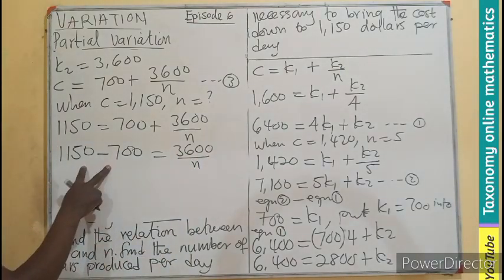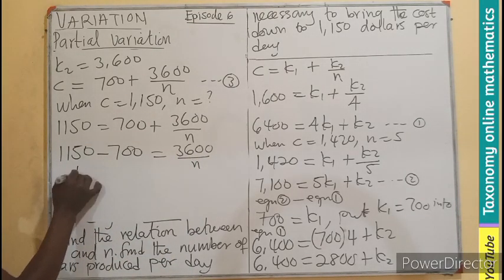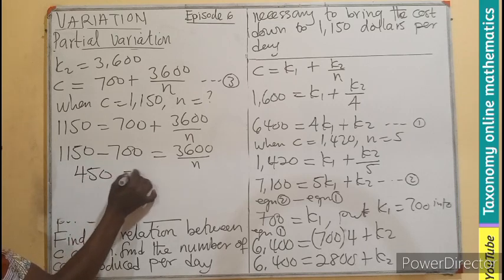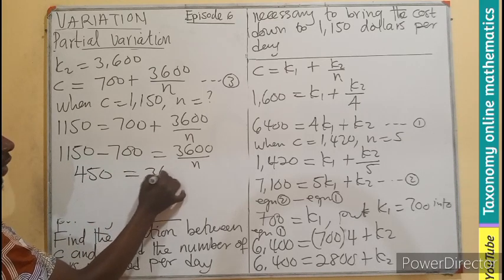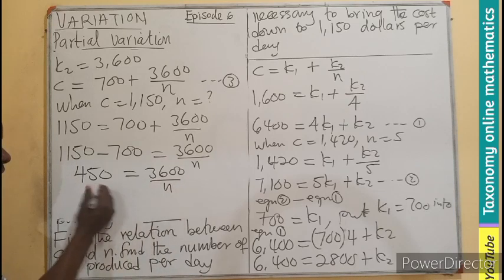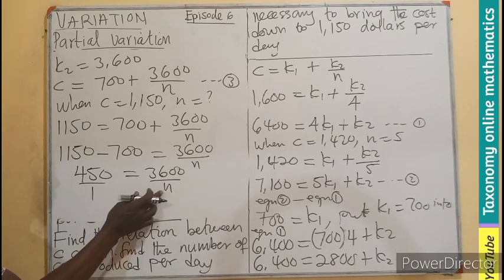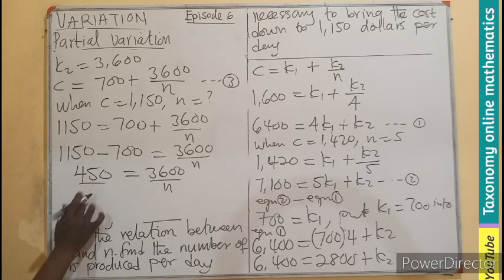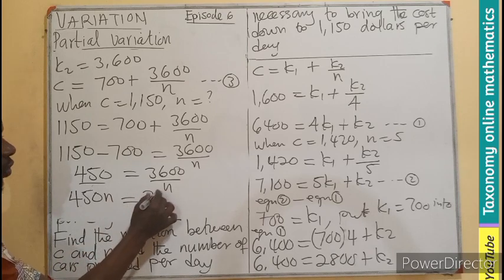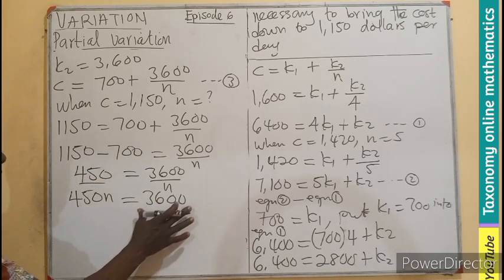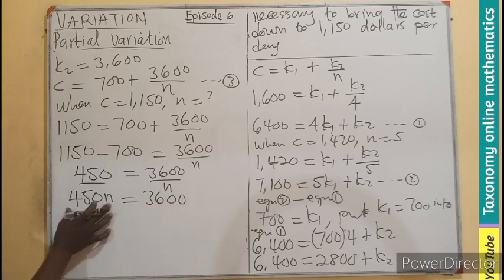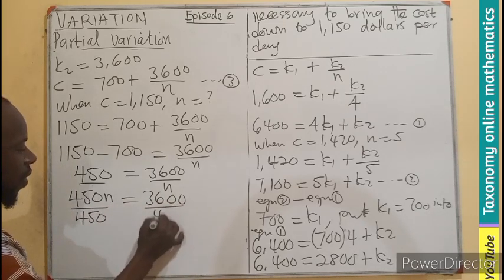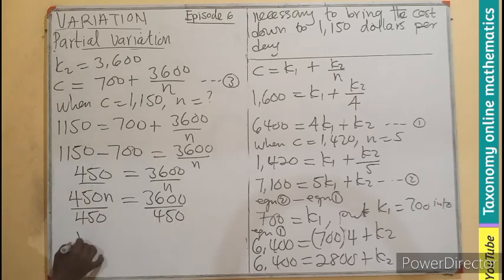1,150 minus 700 equals 3,600 over N. That will give us 450 equals 3,600 over N. Now you agree this is a simple ratio where we can cross-multiply. N will multiply this to give us 450N equals 3,600. So now what do we do? We need the N, so let's divide by 450.